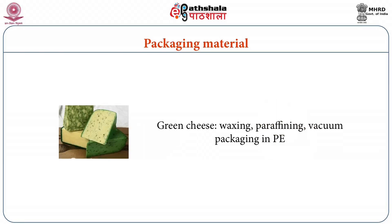Green cheese is packed by waxing and paraffining, or alternatively vacuum packaged in polyethylene bags. Ripened cheese is packed in laminated cellophane film. Cheese consumer packs generally consist of lacquered metal cans or laminates of nylon-polyethylene, PVDC co-polymer, polyester and PVDC co-polymer, or nylon and polyethylene co-polymer. In India, processed cheese is generally what is marketed.